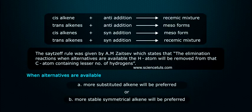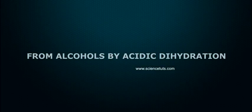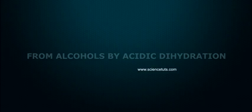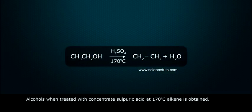a more substituted alkene will be preferred, or more stable, symmetrical alkene will be preferred. From alcohols by acidic dehydration: alcohols when treated with concentrated sulfuric acid at 170 degrees Celsius gives alkene. Ease of dehydration is tertiary greater than secondary, greater than primary.